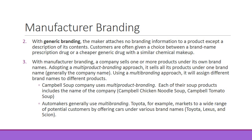Then we have generic branding — the maker attaches no branding information to a product except a description of its contents. Customers are often given a choice between a brand name prescription drug or a cheaper generic drug with a similar chemical makeup. Once a drug is no longer under patent, other pharmaceutical companies can make generic versions. For example, acetaminophen was initially Tylenol, but now there are all kinds of generic versions. Same thing with ibuprofen — similar to Advil but cheaper. If you don't care about the brand name, the generic is almost always the same.